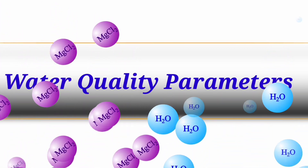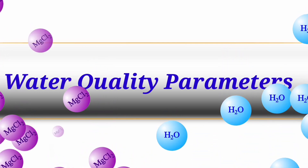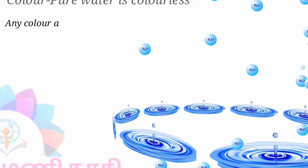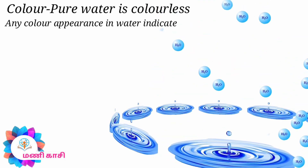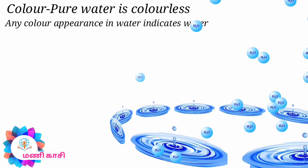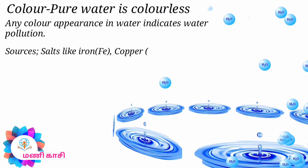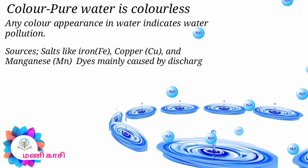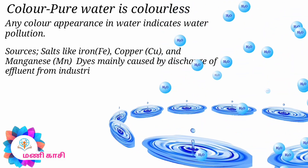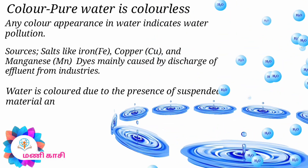Today we are going to discuss about water quality parameters. First we are going to see about color. Pure water is colorless, and any color appearance in water indicates the water is polluted. Sources include salts like iron, copper, and manganese, and dyes mainly caused by discharge of effluent from industries. Water is colored due to the presence of suspended material and dissolved material.